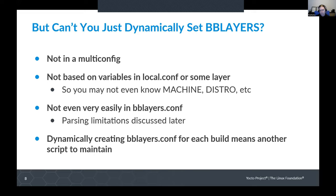The recommendation here is: if your layer can be configurable with features or with machine overrides, then you can just have a single list of layers for your entire build, and that makes life a lot, lot simpler.